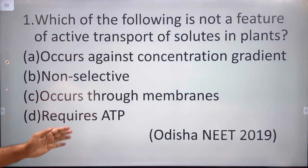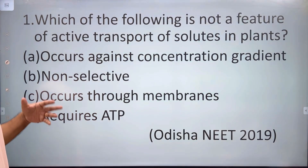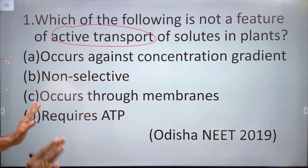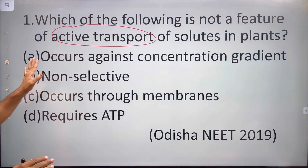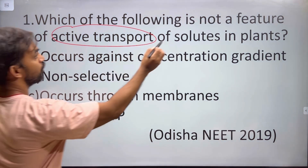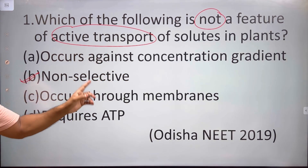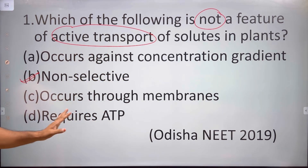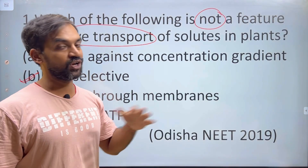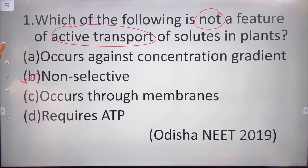Which of the following is not a feature of active transport of solutes in plants? Active transport is the key word. It occurs against concentration gradient — that is correct. Non-selective is not a feature of active transport. It occurs through membrane, requires ATP, and is a selective process. So 'non-selective' is not a feature of active transport.